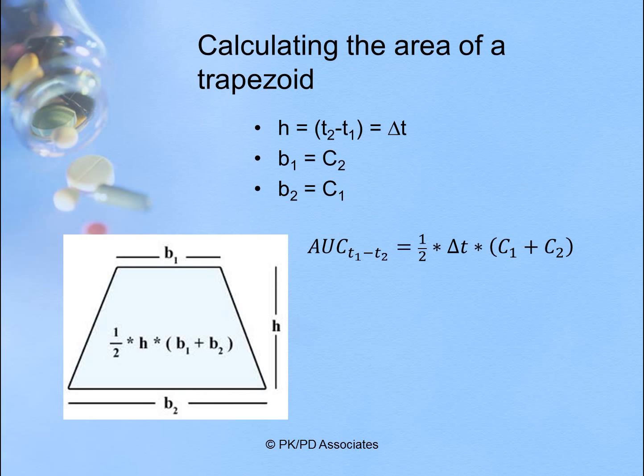So how do you calculate the area of a trapezoid? The area of a trapezoid is one-half times the height times the sum of base one plus base two. In other words, it's the height times the average length between the two bases.